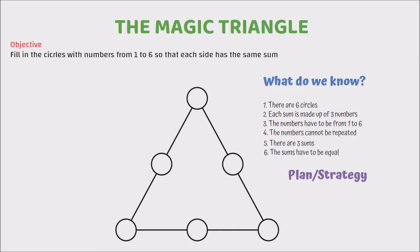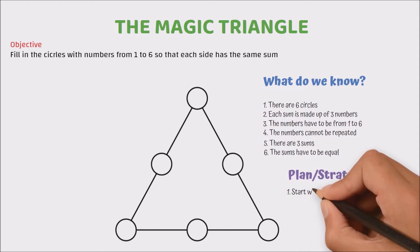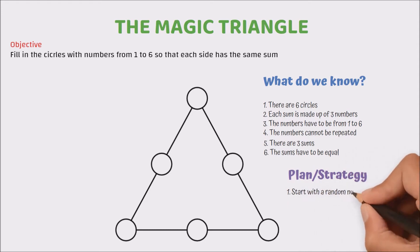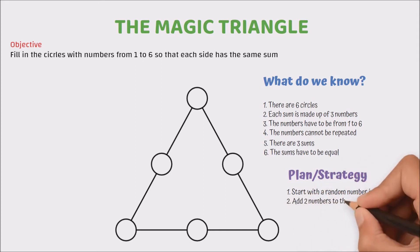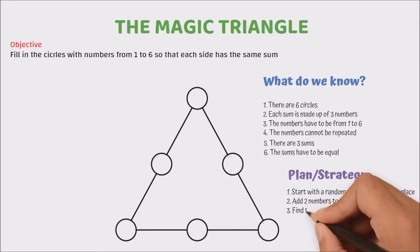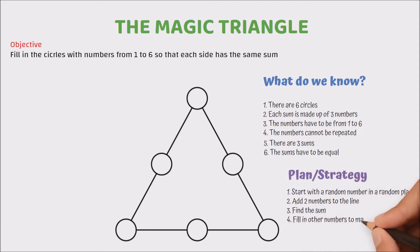So here's my plan. I'm going to start with a random number in a random place. Then I'm going to add two numbers to it. Then I'm going to find the sum of those three numbers and then finally I'm going to fill in the other numbers so that I'll be able to match the sum of my first three. Hopefully if I'm lucky I'll be able to solve. So let's go.